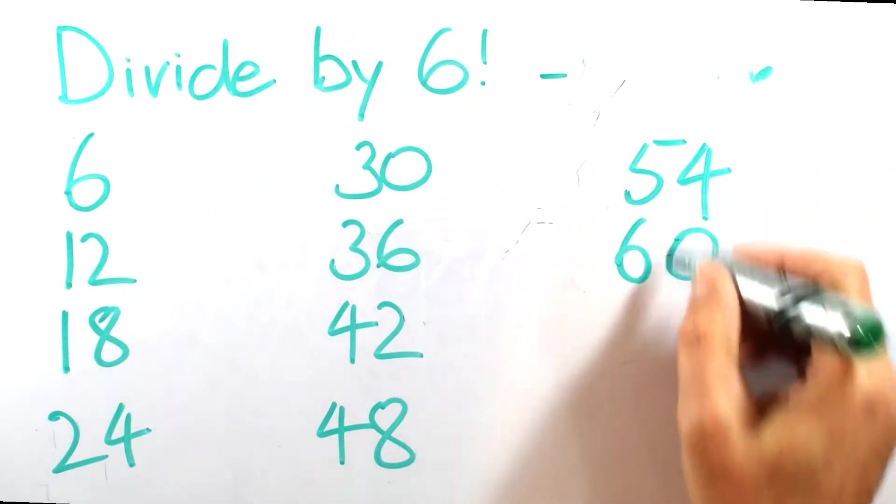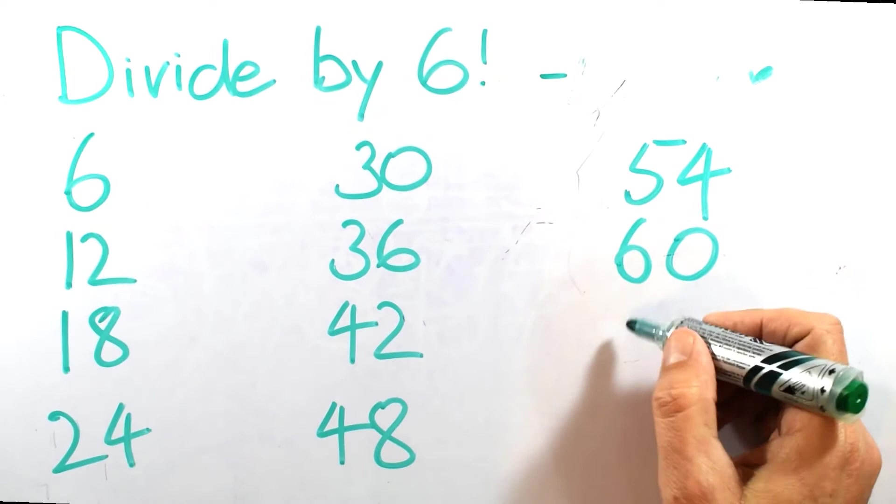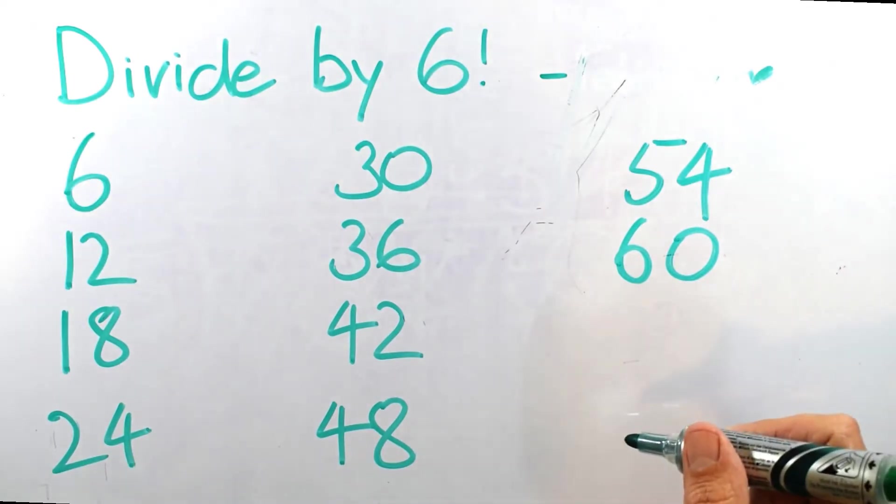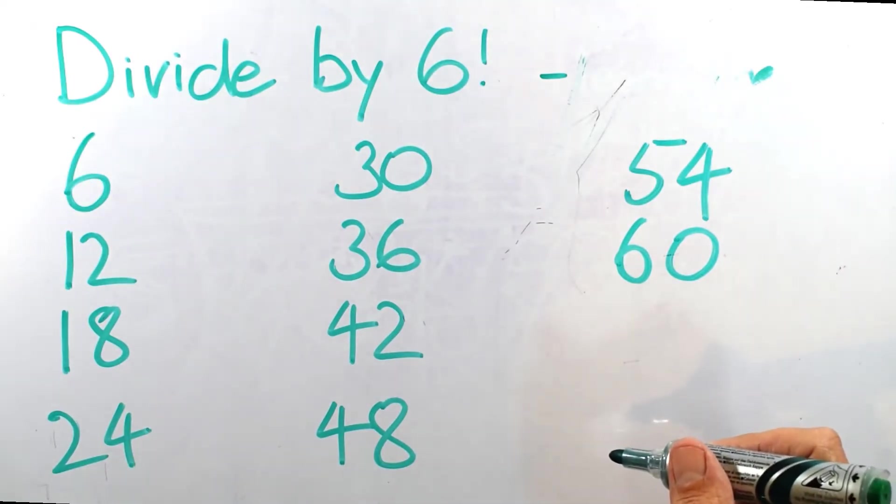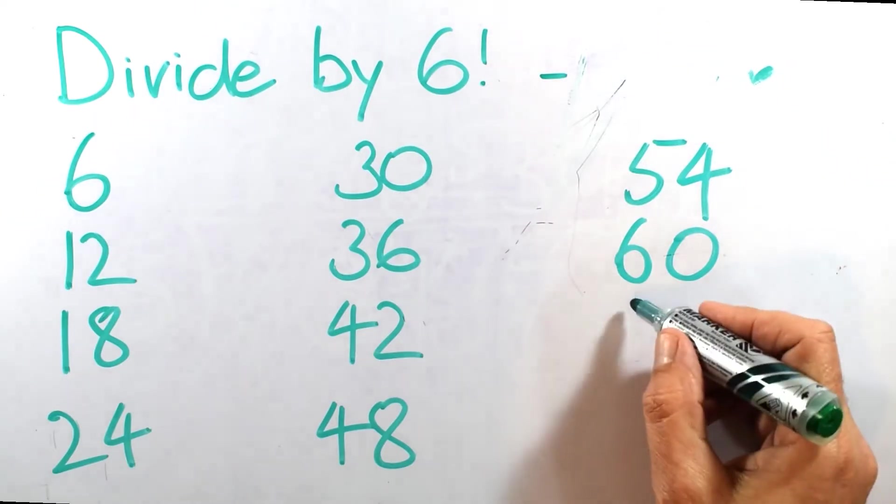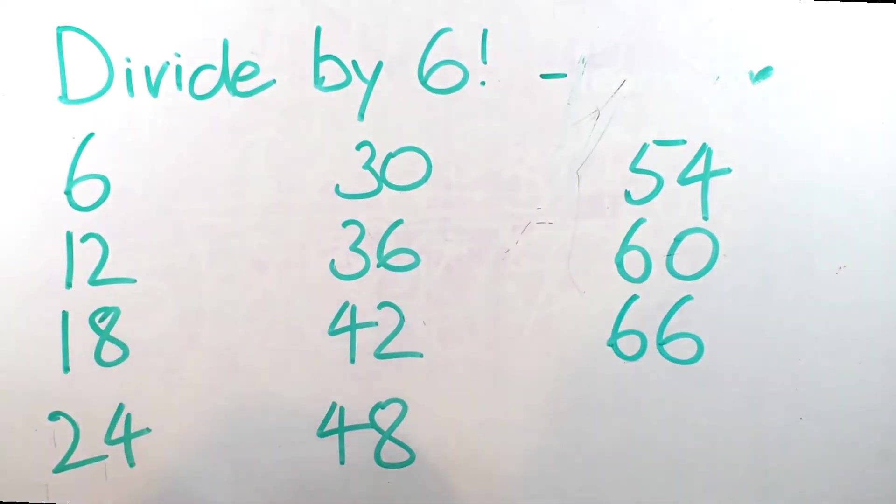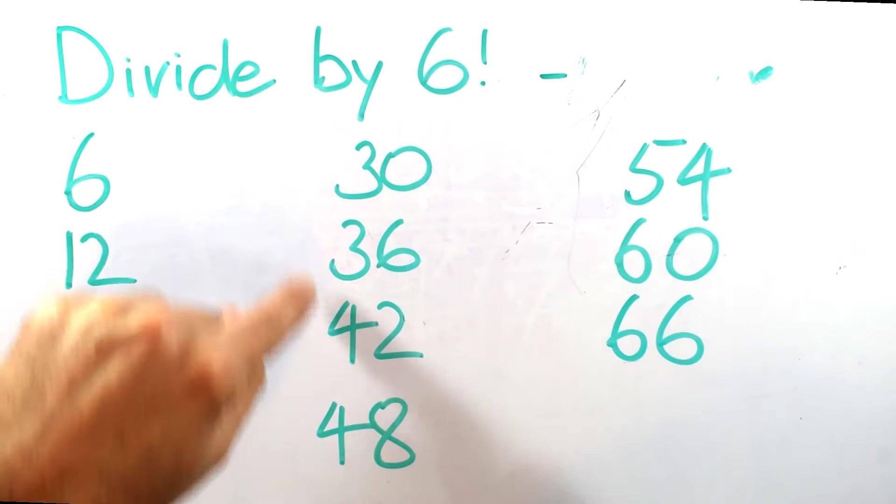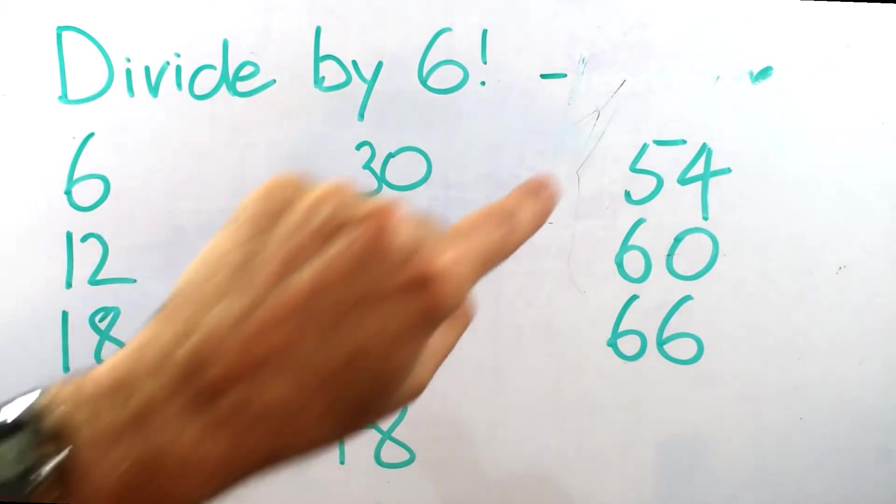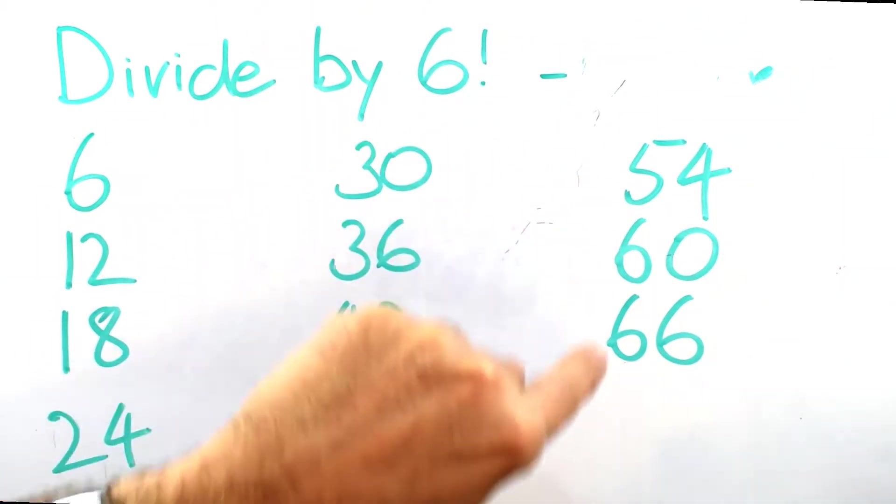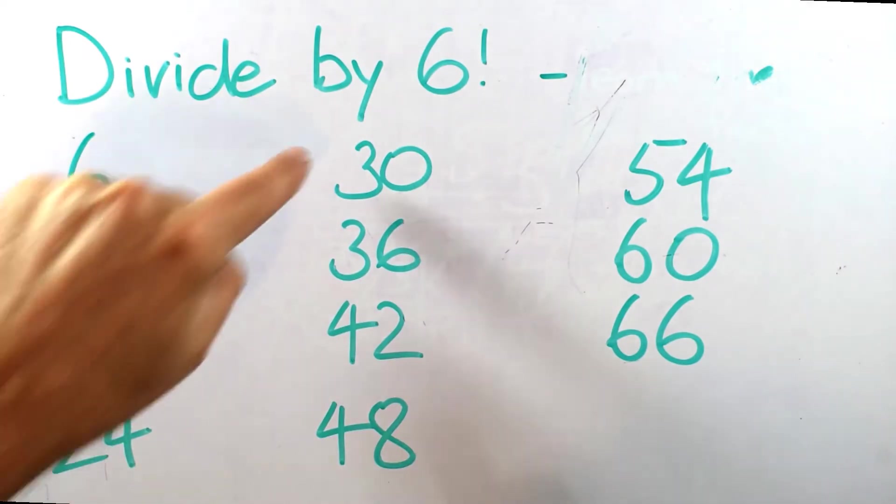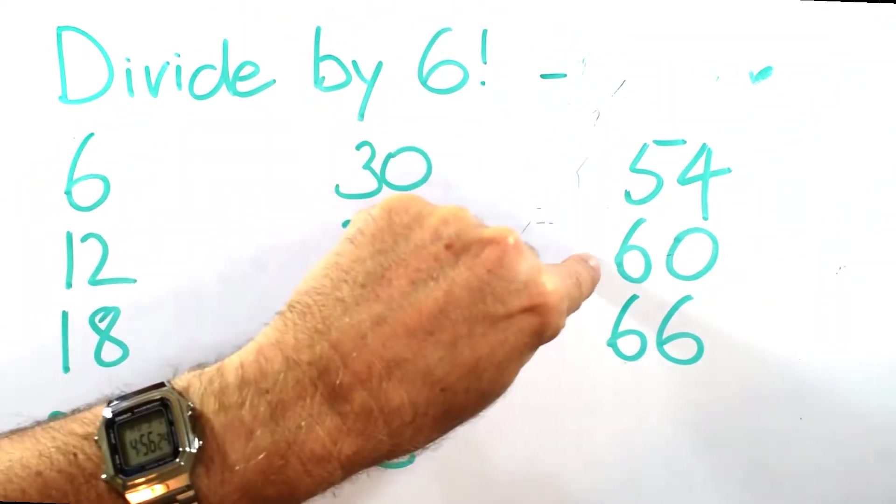Then 54. Then 60. And have I missed one? I feel like I've missed one. 66. Let's double check. Make sure I've got more. 6, 12, 18, 24, 30, 36, 42, 48, 54, 60, 66, 1, 2, 3, 4, 5, 6, 7, 8, 9, 10, 11.